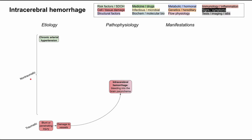The most prominent non-traumatic cause is chronic arterial hypertension — the same type seen with high salt intake, sedentary lifestyle, cigarettes, and alcohol. The hypertension forms Charcot-Bouchard microaneurysms, and over an extended period of time these microaneurysms can rupture, triggering the bleed into the brain. The most common site of bleeding is the putamen, followed by the thalamus, then other areas like the pons and cerebellum.